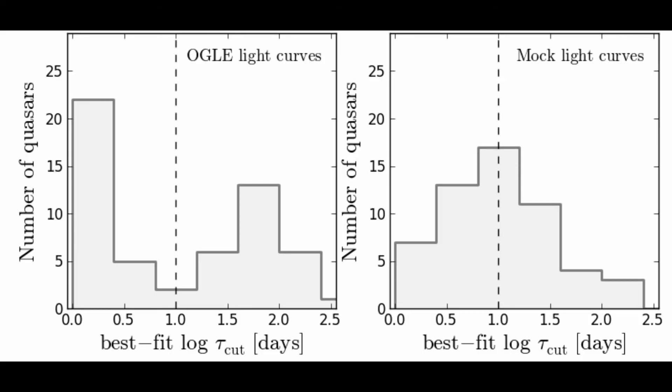For the Kepler exponential model, Figure 5 compares the distribution of quasars as a function of the best fit tau cut for the data on the left panel and for the mock on the right. We can clearly see the bimodal distribution of tau cut in the data, which may suggest the existence of a cutoff timescale from a month to a quarter for about half of the quasars.